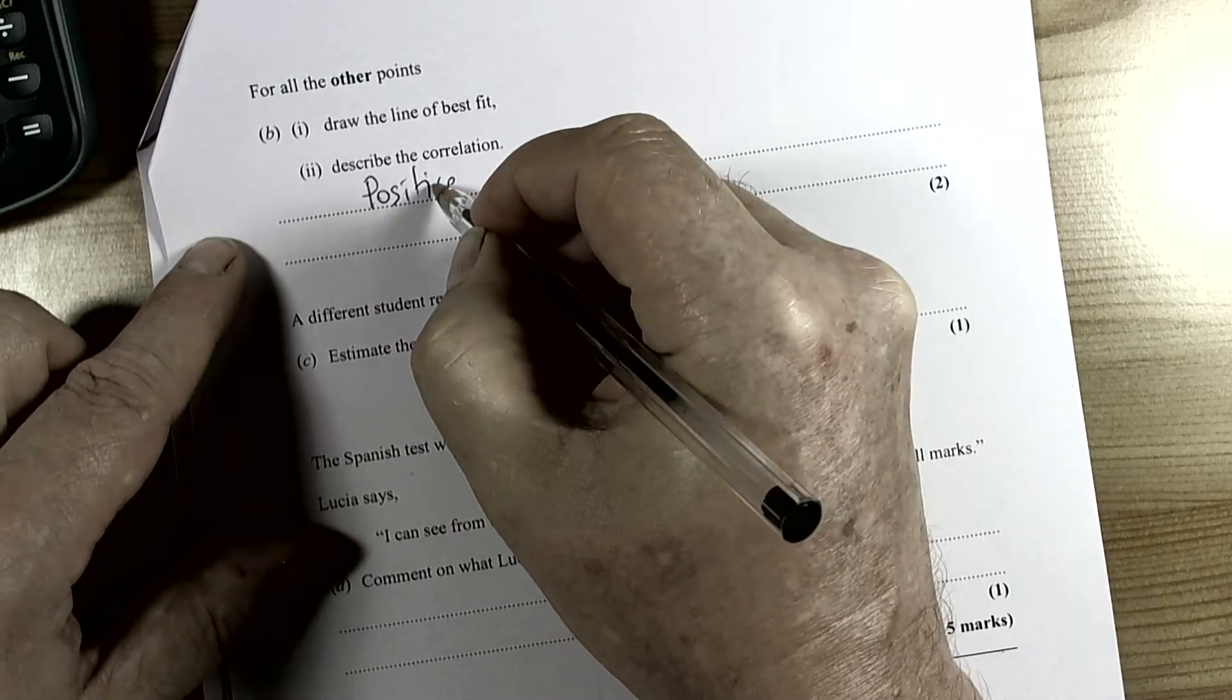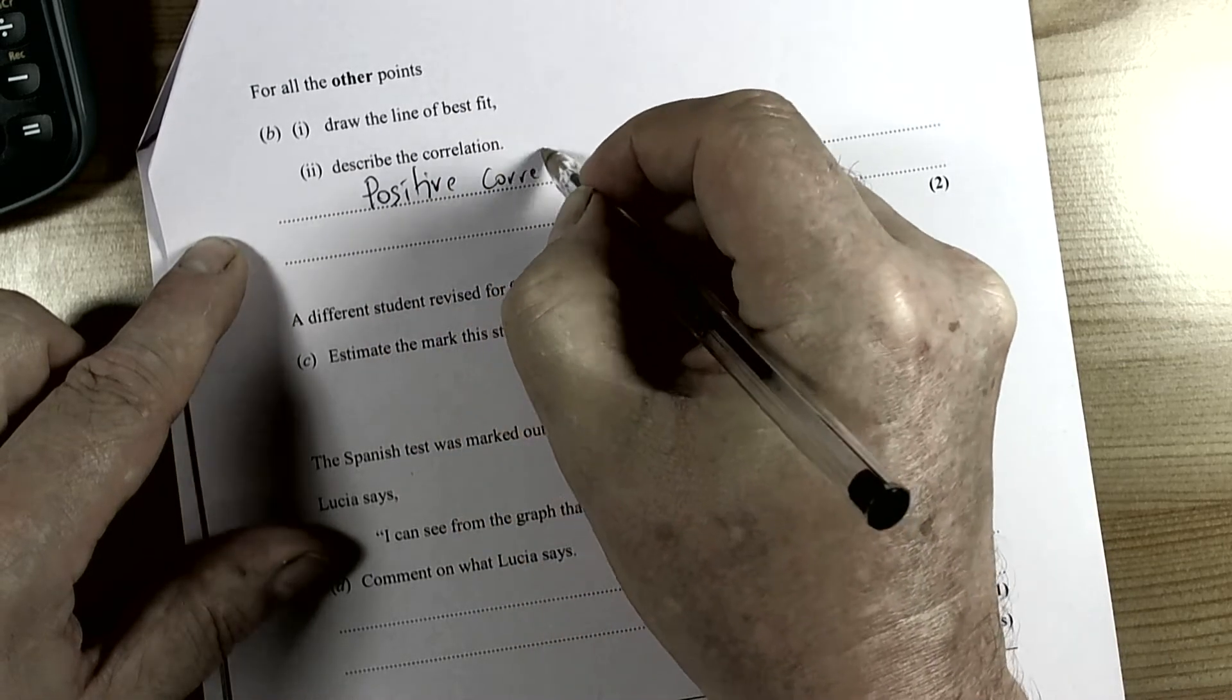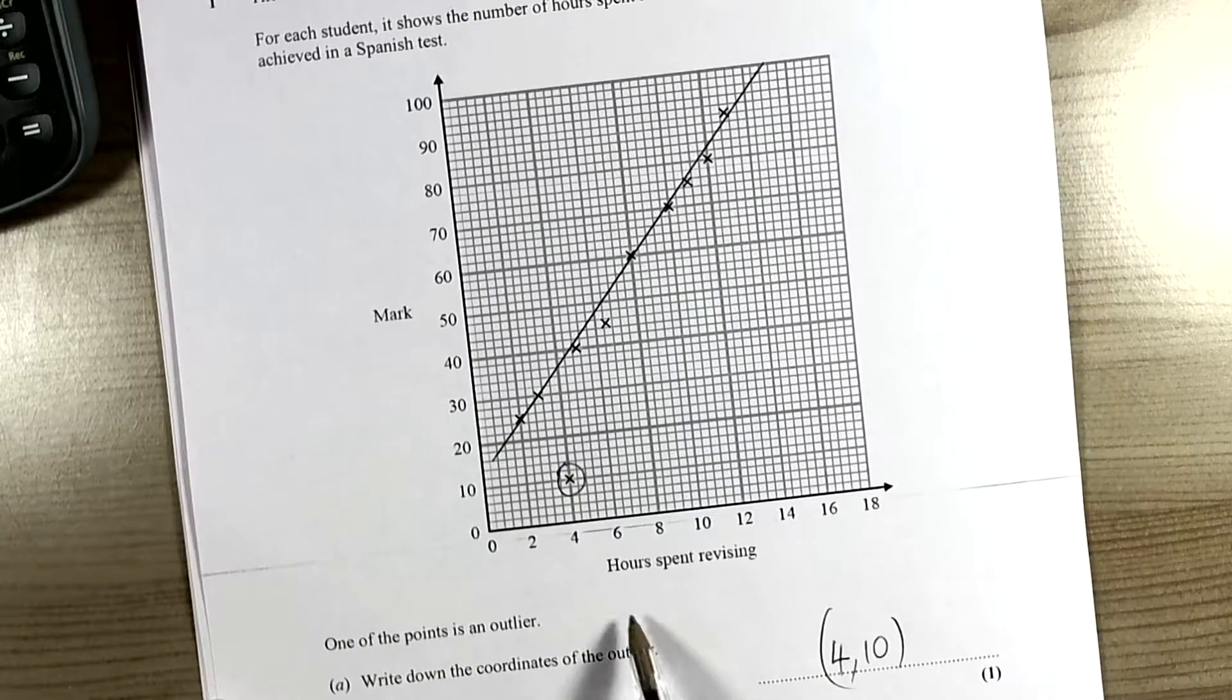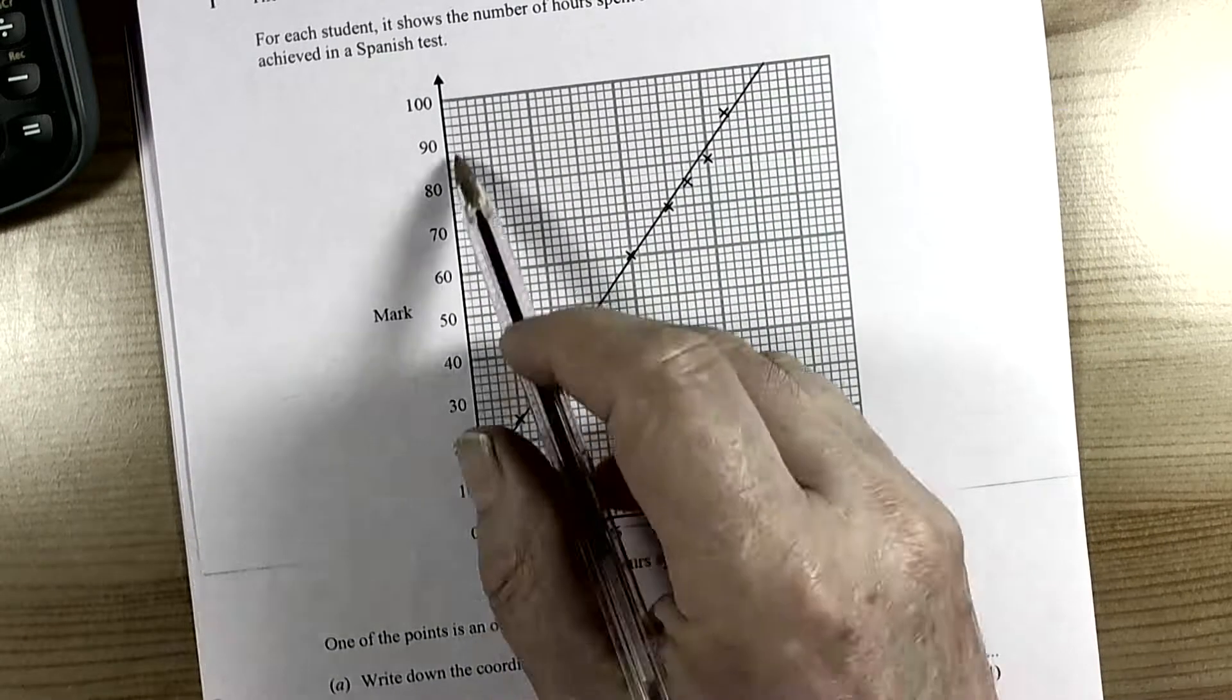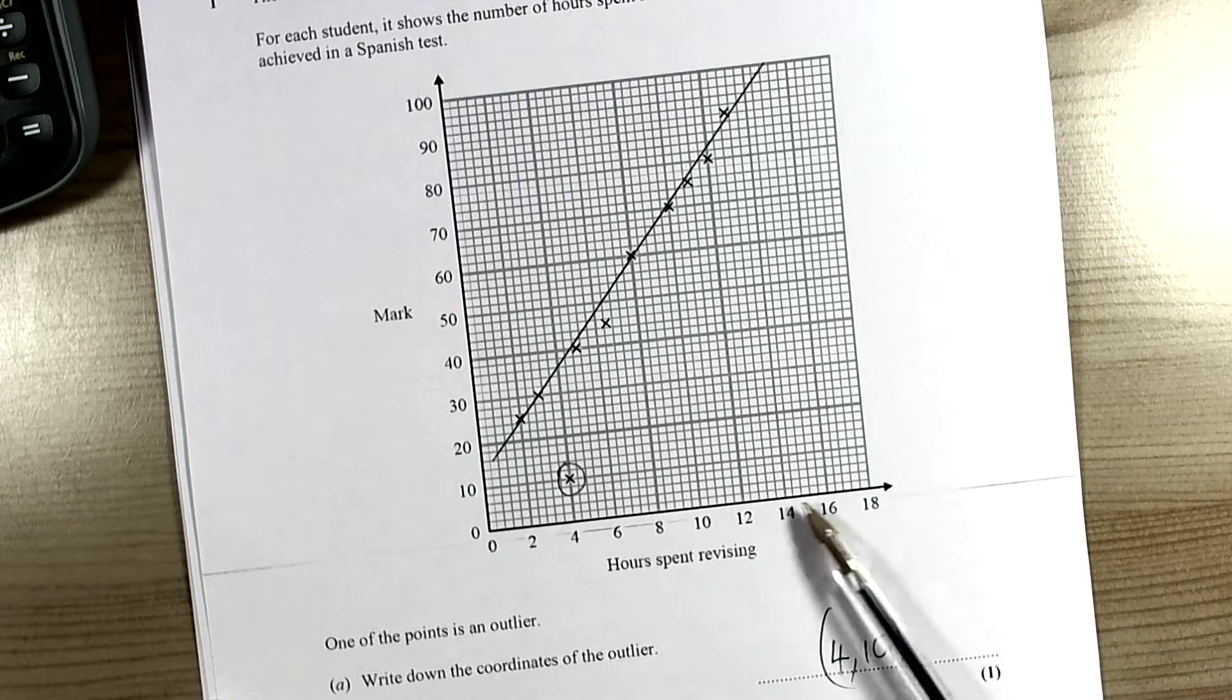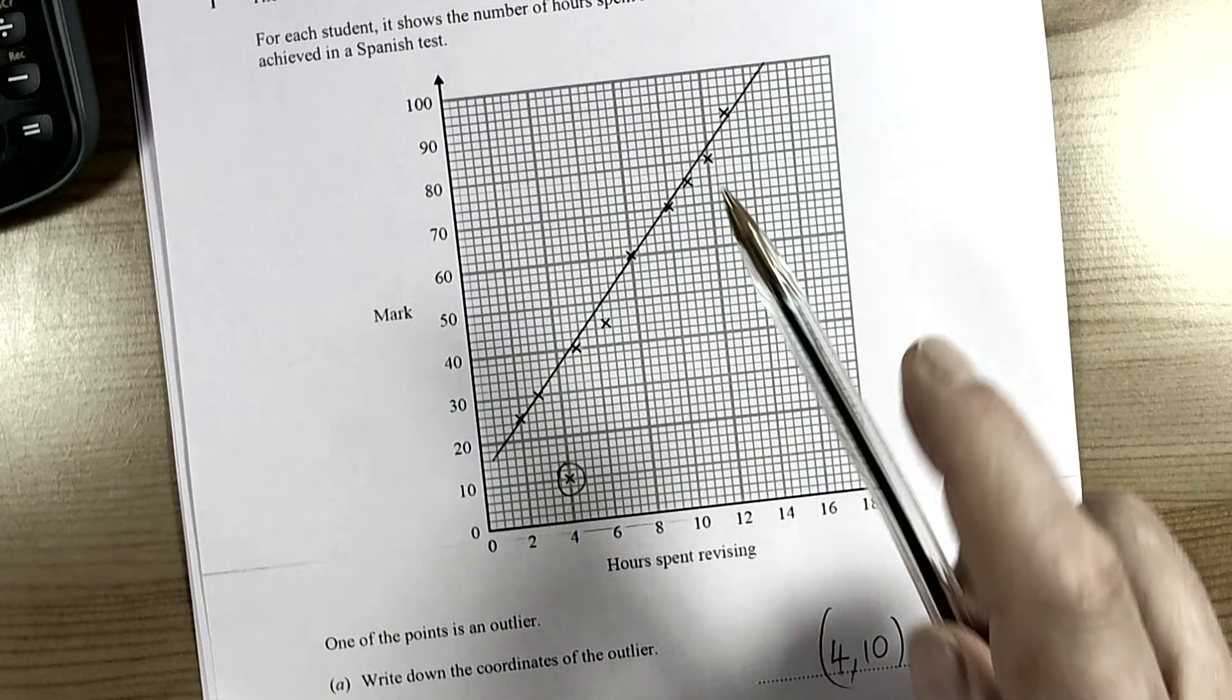It's asked for the correlation so we don't need to talk about the idea that as the hours spent revising goes up, the mark in tests goes up. If it asks for the relationship, that's what it would be expecting - to say that the more hours you spend revising, then the better your mark.